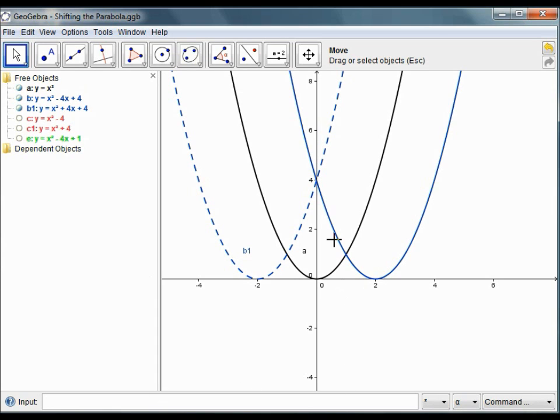Alright, now if I want to shift the parabola up or down, suppose I want to shift the parabola down by 4 units, then equation C is the equation for this red parabola, which has the vertex shifted by 4 units down along the y-axis: x squared minus 4. If we want to shift it up by 4 units as well, then y equals x squared plus 4, and we'll have the red dotted line parabola.